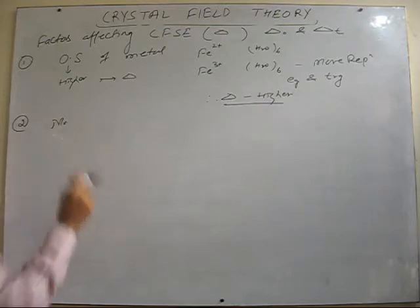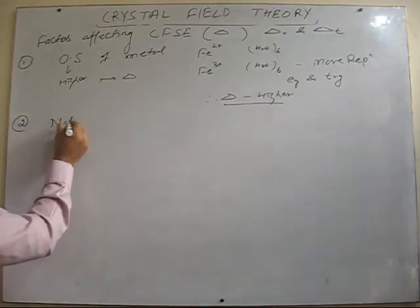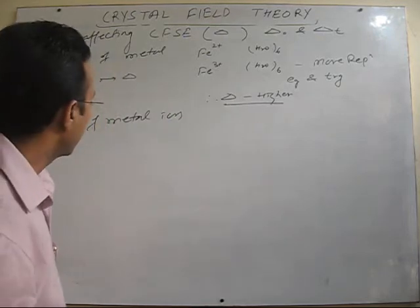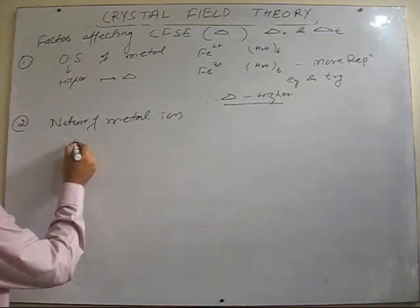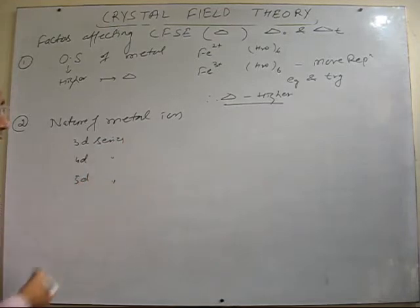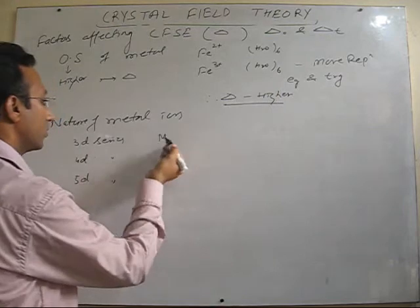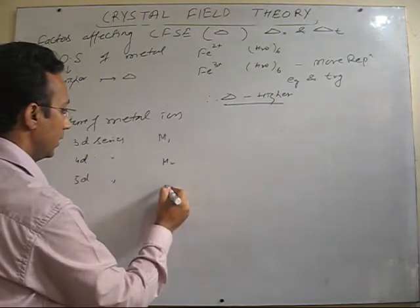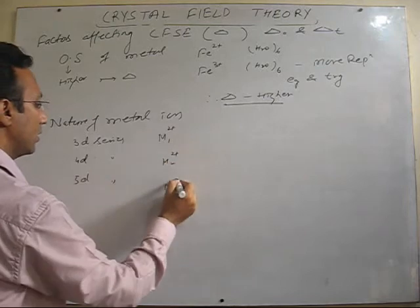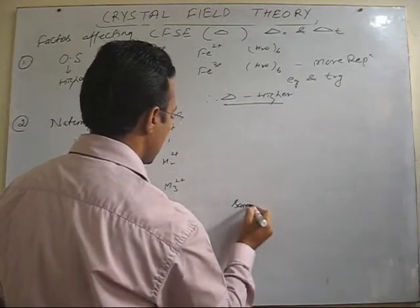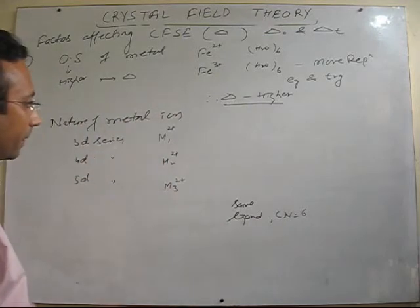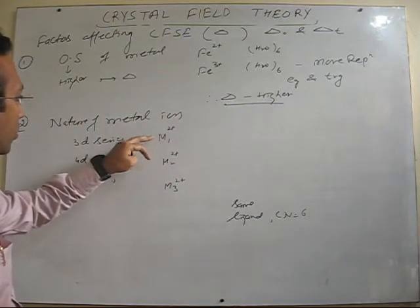The second factor is the nature of the metal ion. Here we consider metal ions belonging to the first transition series (3D series), metals belonging to the 4D series, and metals belonging to the 5D series. Suppose M1 belongs to the 3D series, M2 belongs to 4D, and M3 belongs to 5D — all are in the same oxidation state, say +2, combining with the same ligand, and the coordination number is the same.